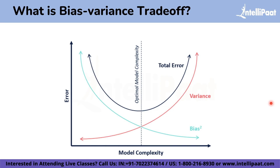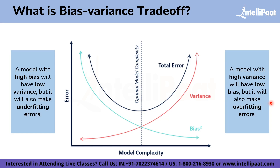In terms of model complexity, we can use the following diagram to decide on the optimal complexity of our model. This graph is a classic illustration of the bias and variance trade-off. A model with high bias will have low variance but will make underfitting errors, whereas a model with high variance will have low bias but will make overfitting errors. The optimal model complexity is the point where the model has the lowest total error, as shown by the optimal model complexity line on the graph.